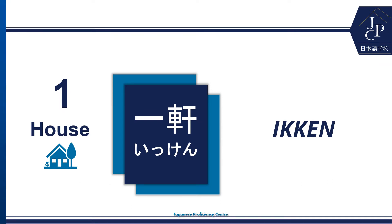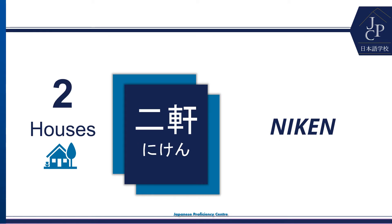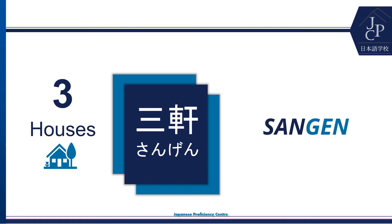Today we are going to learn how to count houses and other buildings in Japanese. For one house we say 一件 (itten). 一件. 2件. 3件.